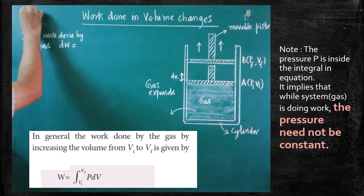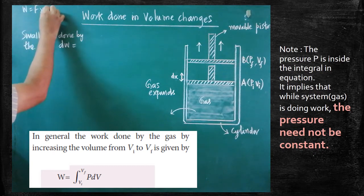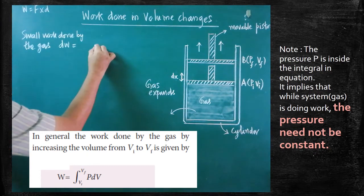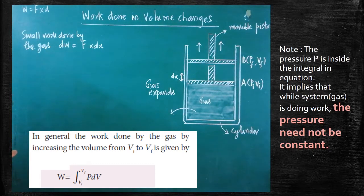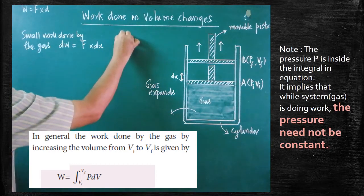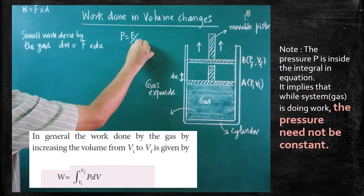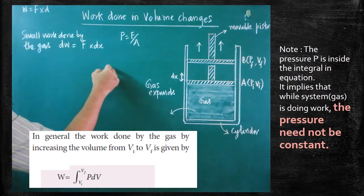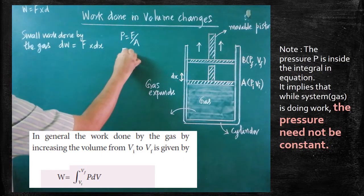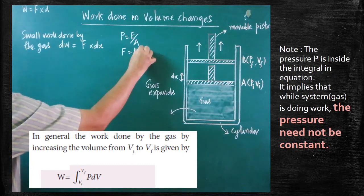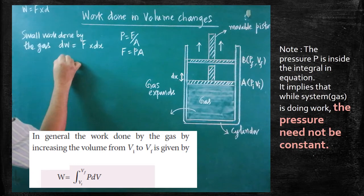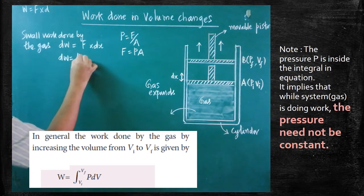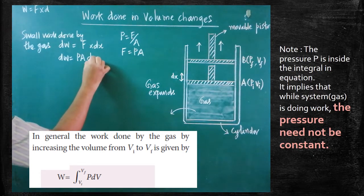What is the general formula for work done? Work done is equal to force into displacement. So here the displacement is dx, and that should be multiplied by force. We know the formula for pressure: pressure is equal to force divided by area, where area is the area of cross-section of the piston. So to find out F, F is equal to P into A. By multiplying the pressure and area, we get the expression for force. Therefore, dW is equal to P into A into dx.